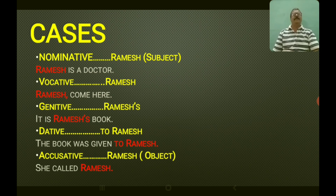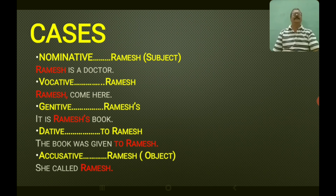The vocative case is when you place a comma after a name, indicating someone is being called. Example: 'Ramesh, come here' — here Ramesh is in the vocative case. The genitive case uses an apostrophe to show possession. Example: 'It is Ramesh's book' — something belongs to Ramesh, so it is the genitive case.